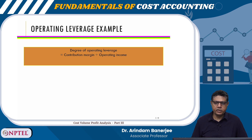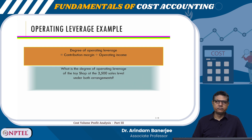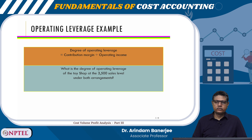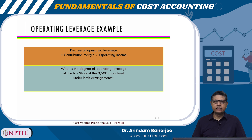The degree of operating leverage can be calculated by dividing the contribution margin by the operating income. We will calculate the degree of operating leverage of the toy shop at the 3,500 sales level under both arrangements.